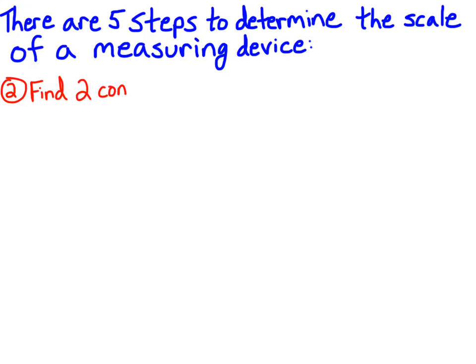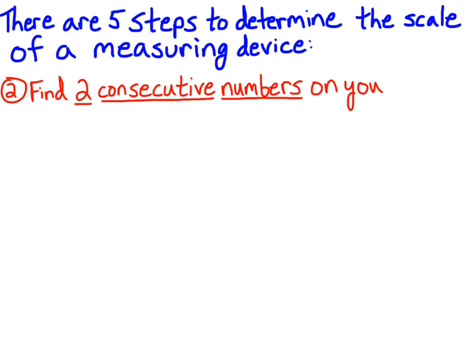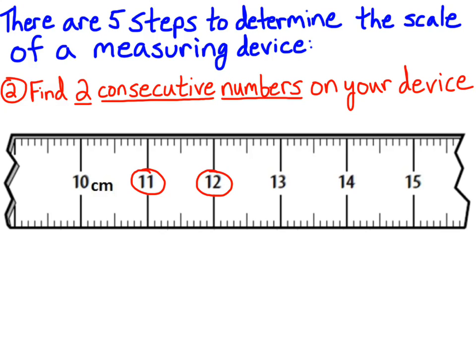The second step for determining the scale of our device is to find two consecutive numbers on your device. Looking at our ruler, we've got two consecutive numbers printed on the device: 11 and 12. Those are our two consecutive numbers.